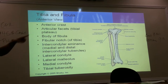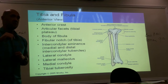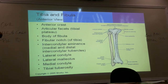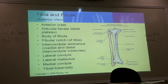Moving up, you have the tibial tuberosity. It is a bony projection with a very rough surface, and you have a ligament attached to it that communicates with the patella. That's your tibial tuberosity.